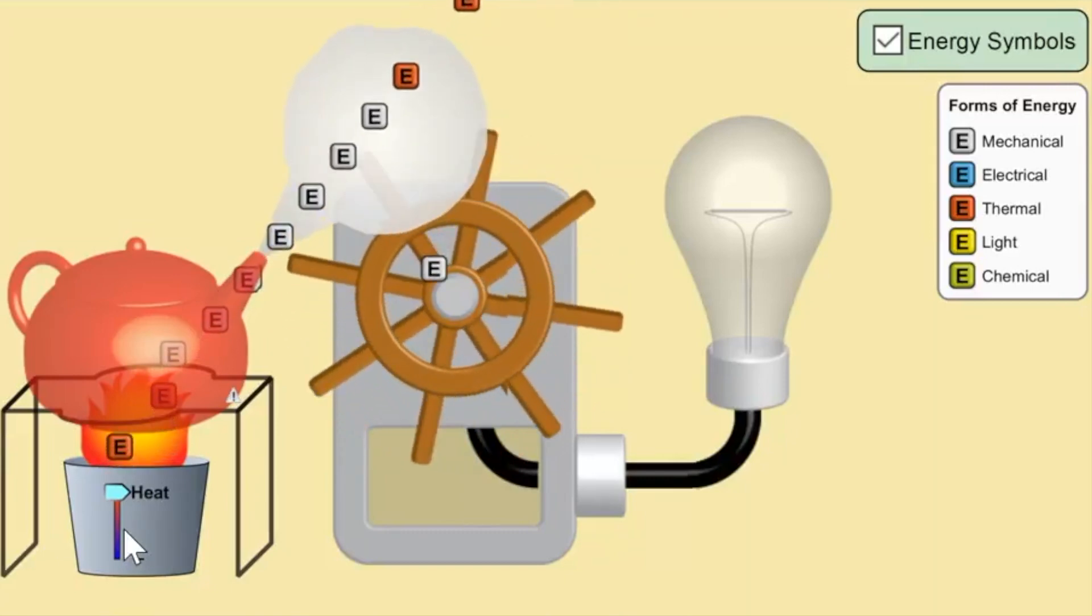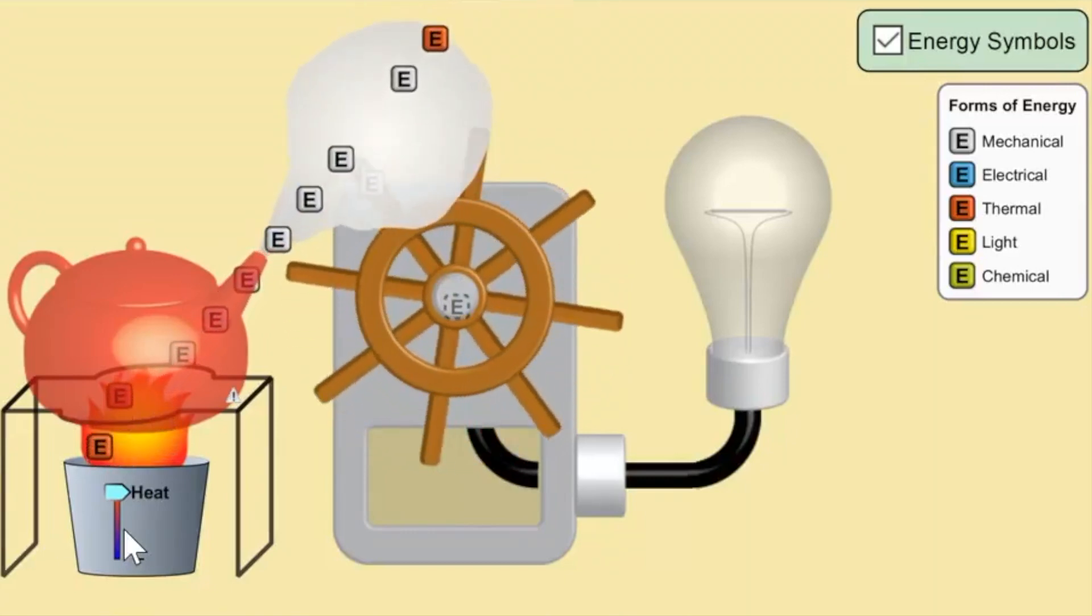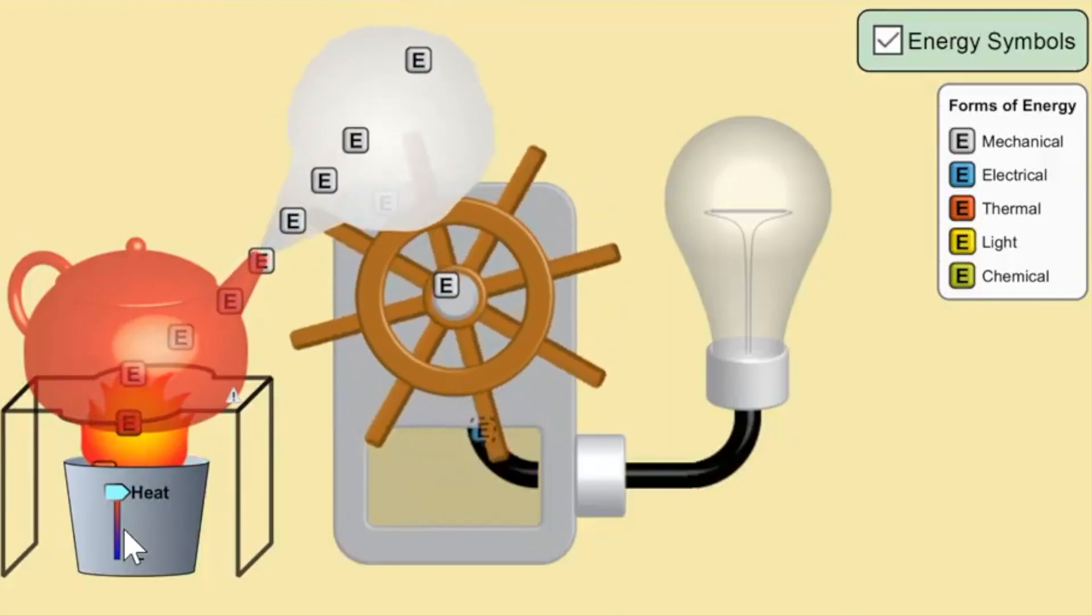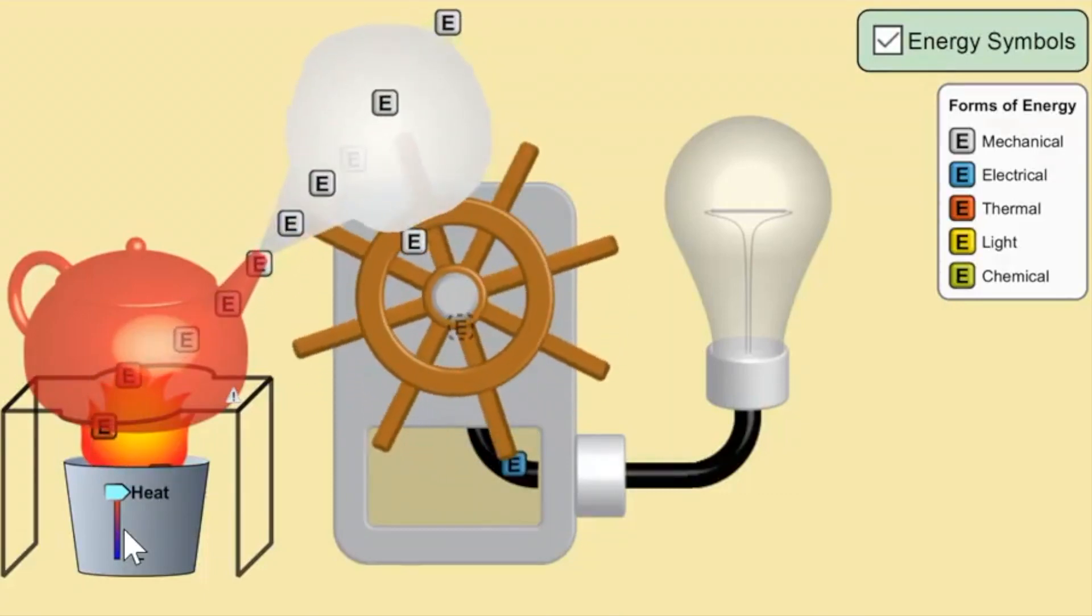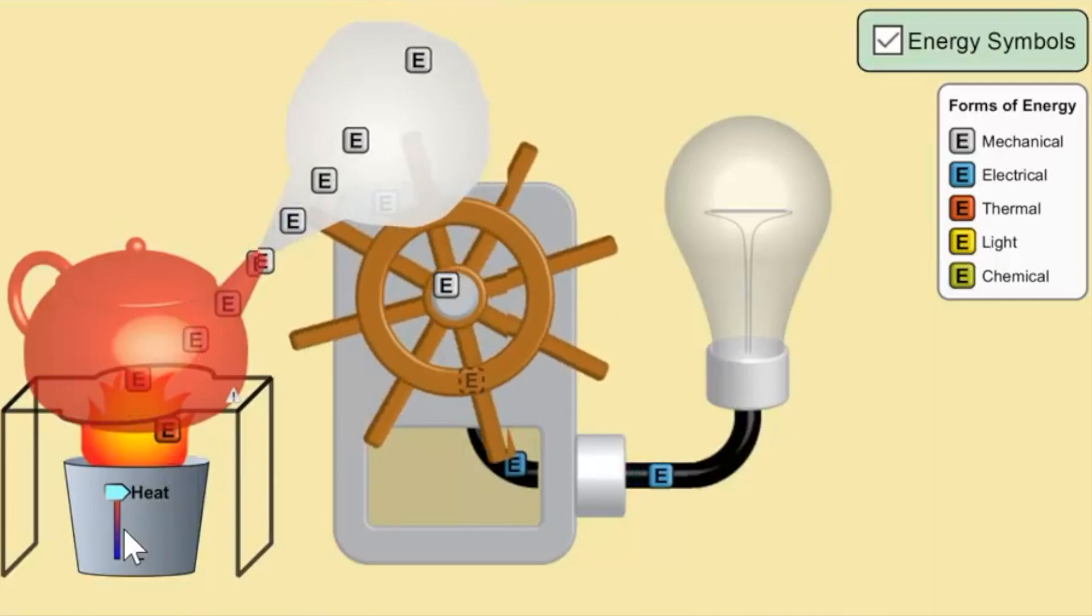Now that water eventually turns to steam and that steam comes out the spout of the kettle. Now, as you can see, the E's that are coming out of the spout are both red and white. So there is some thermal energy being lost here, but there's also some mechanical energy. Now that's the motion of this mass of steam that's coming out.